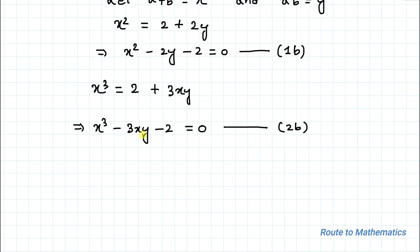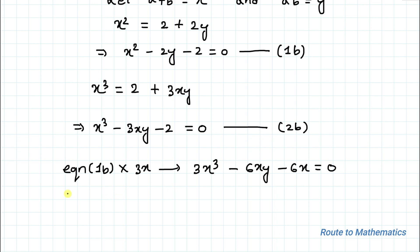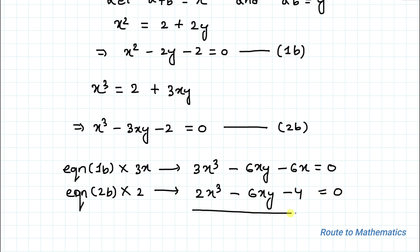In the next step, let's eliminate the xy term using the elimination method by subtracting equation 2b from 1b. To eliminate xy, multiply equation 1b by 3x to get: 3x³ - 6xy - 6x = 0, and multiply equation 2b by 2 to get: 2x³ - 6xy - 4 = 0. Subtracting, the 6xy terms cancel, giving us: x³ - 6x + 4 = 0.